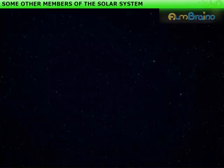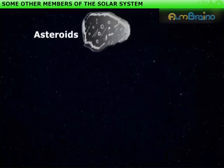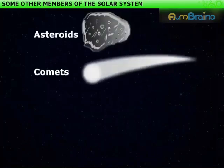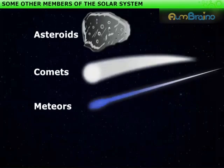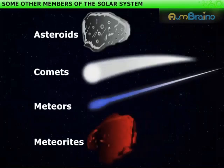Let us learn about some members of the solar system other than planets. They are asteroids, comets, meteors, and meteorites.